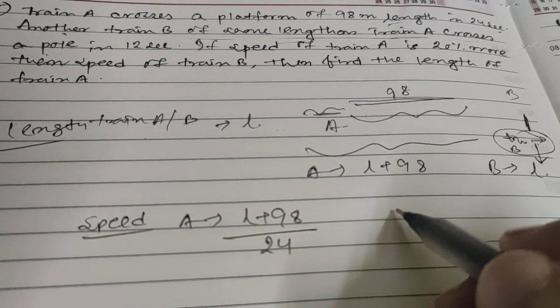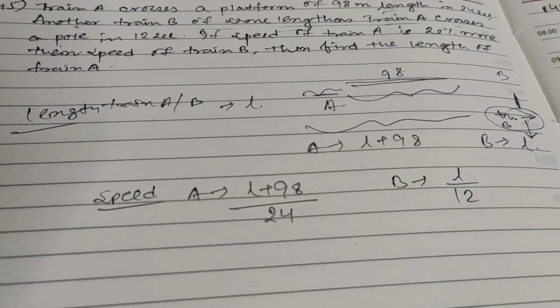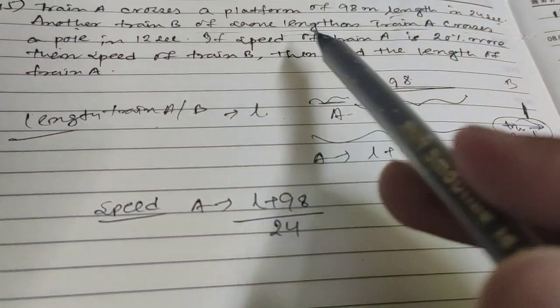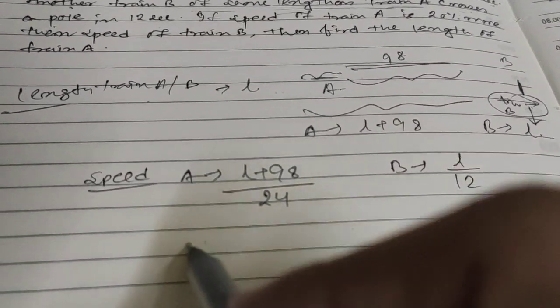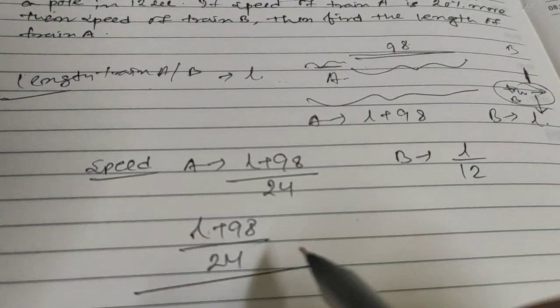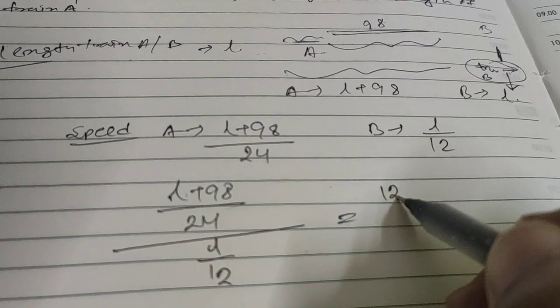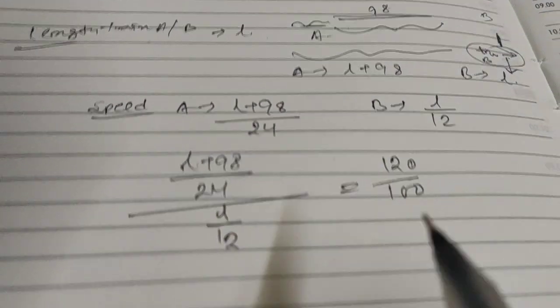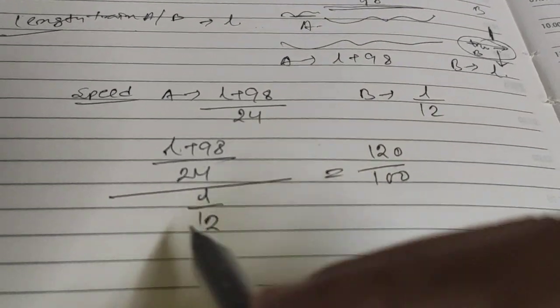Speed of train A is 20% more than the speed of train B. So (L plus 98) by 24 divided by L by 12 equals 120 divided by 100, as speed of A is 20 percent more.